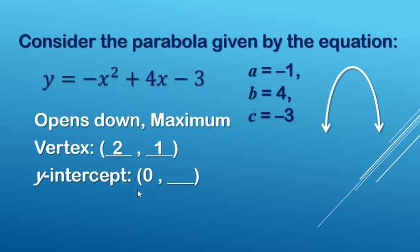Now for the y-intercept, the x value on the y-axis is 0. So we're going to take our original equation and replace the x's with 0. So 0 squared, 0 plus 0, minus 3 makes negative 3, which is the same as the c value.